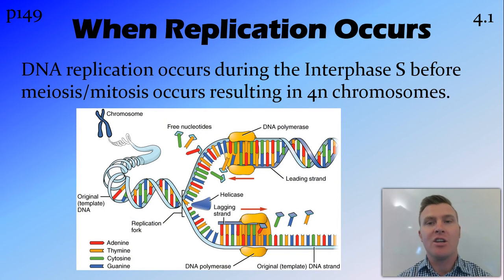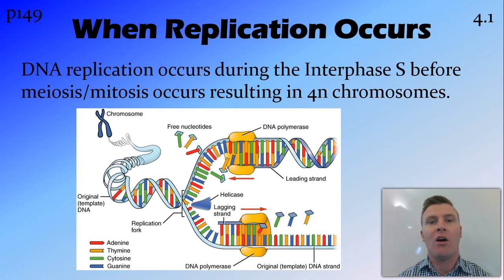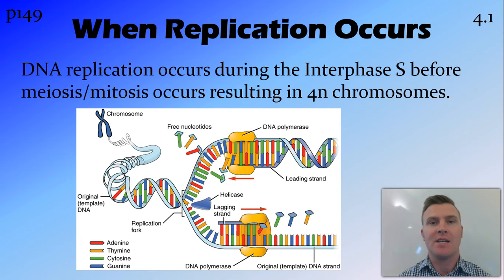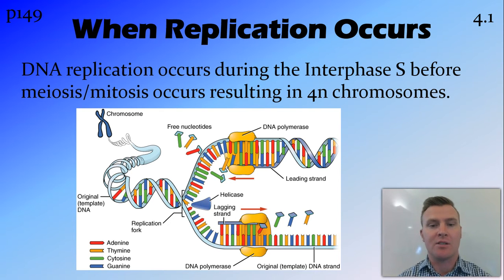Firstly, replication occurs during the interphase S stage of a cell's lifetime. So this is before it undergoes meiosis or mitosis, depending on the process that we're about to lead into. And it results in 4N chromosomes.